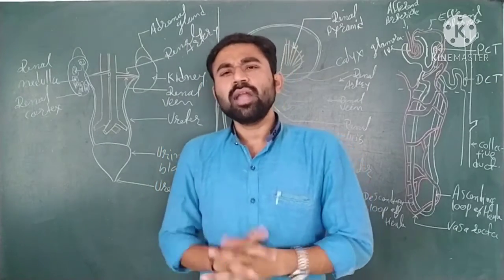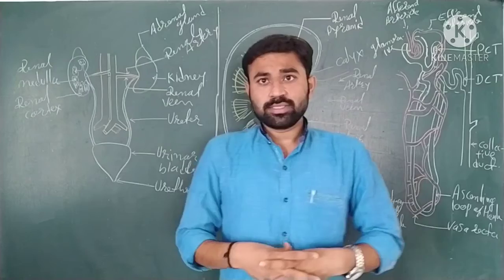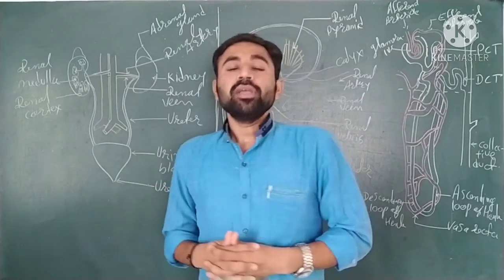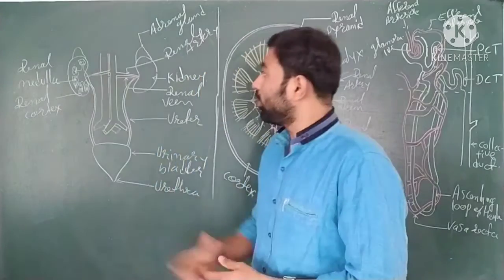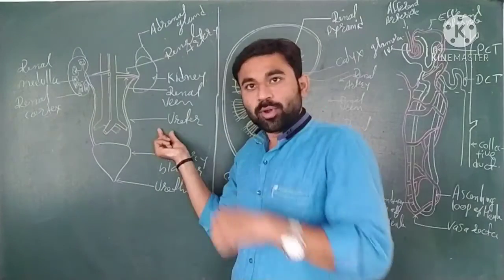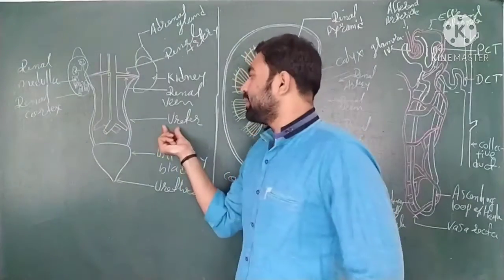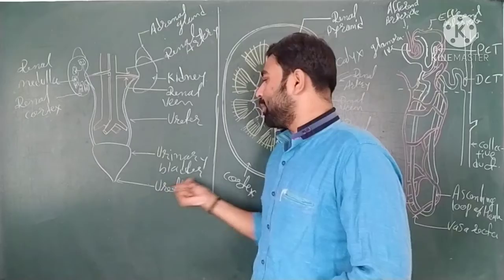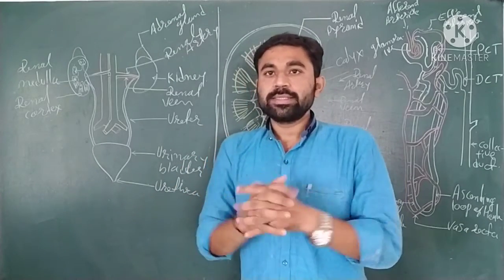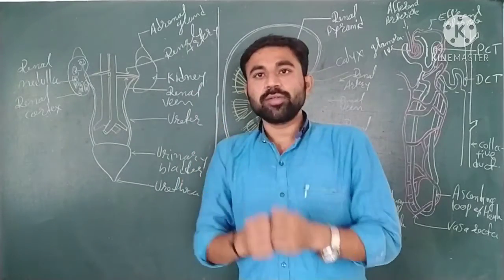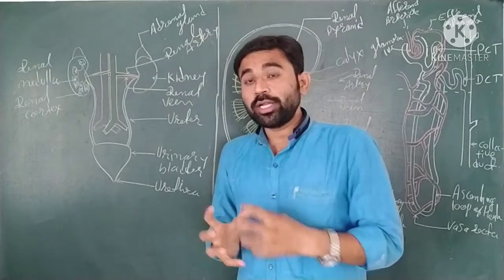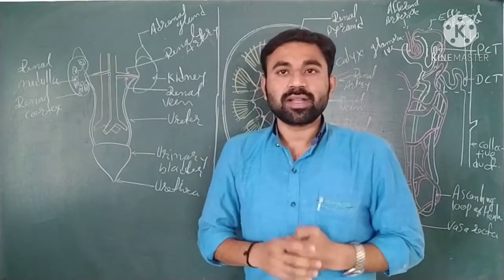The excretory organs that help eliminate excretory products are: first, one pair of kidneys; second, one pair of ureters; then the urinary bladder, which is a chamber-like structure that collects urine from the ureters. The urinary bladder then opens to the outside of the body through the urethra.